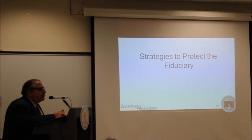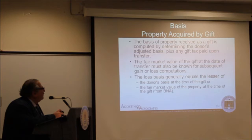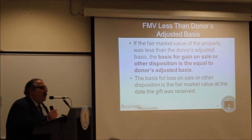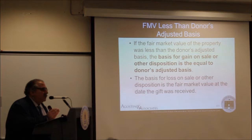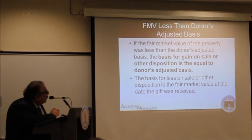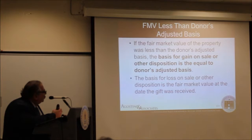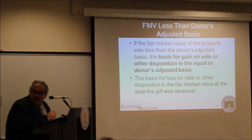Sometimes you have two bases. If the asset gifted has a higher cost basis than the fair market value, you'll have two different bases. When the fair market value of the property is less than the donor's adjusted basis: if you sell it for a profit, you use the donor's adjusted basis. If there's a loss, you step the basis down to fair market value to minimize the loss. This is a question on the tax credit exam — the basis for gain equals the donor's adjusted basis, and the basis for loss equals fair market value.